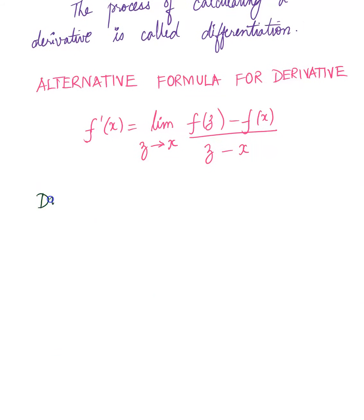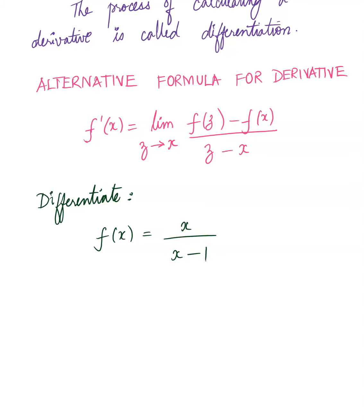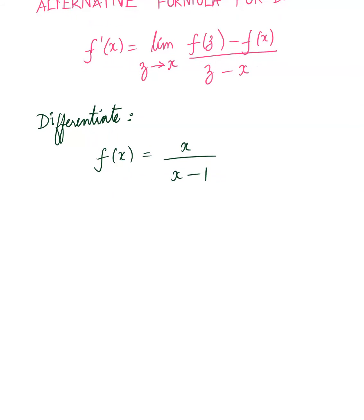Let's start with the first problem. It says differentiate x over x minus 1. Notice the language — they could say differentiate or find the derivative. If they simply say differentiate, because the process of calculating the derivative is known as differentiation, you know they want us to provide it in the calculus form, which is the derivative. So we are asked to find f prime of x.